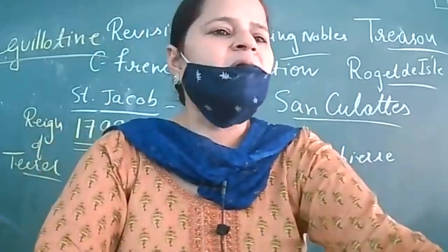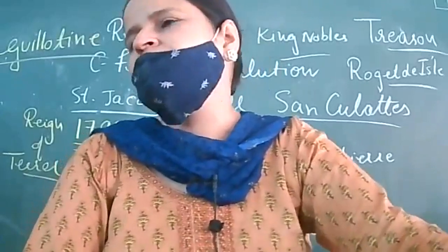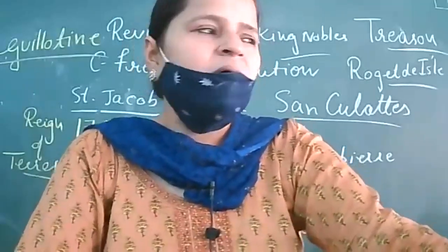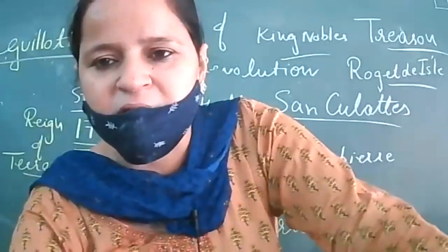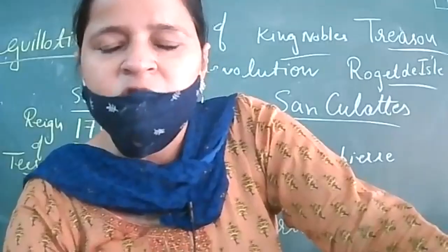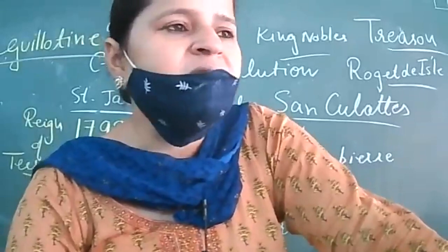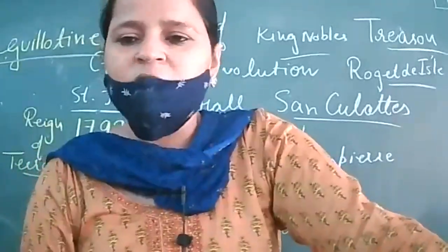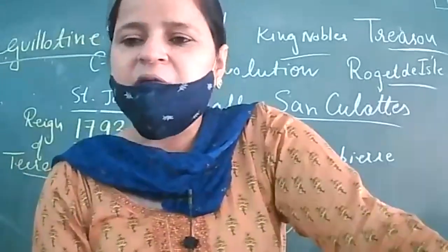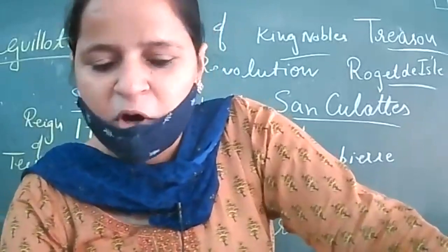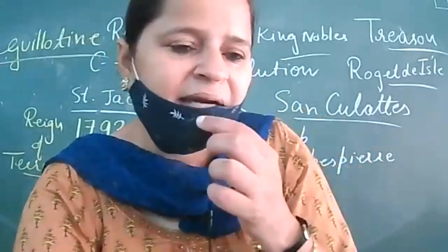He fixed wages for labor. If any industrialist employed labor, the wages would be fixed by the government — neither reduced nor exceeded. Many people in society were anti-Robespierre because of this. Those who wanted to sell their goods at a high rate felt that the government's fixed price would cut their profits. Industrialists were compelled to pay fixed wages and sell goods at government-fixed rates.